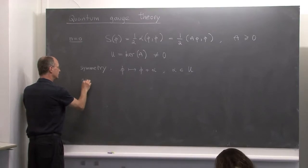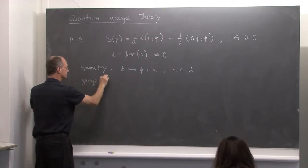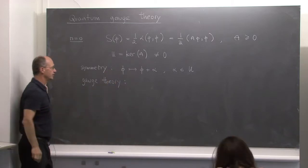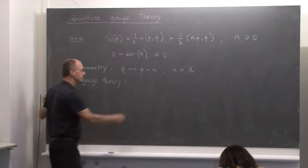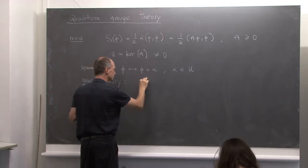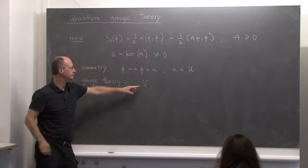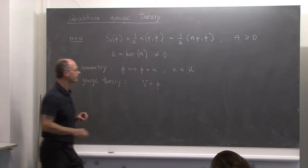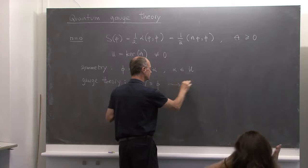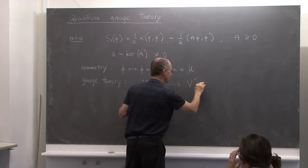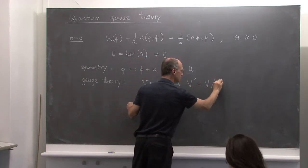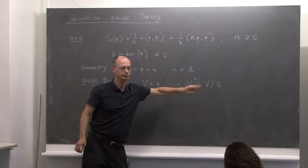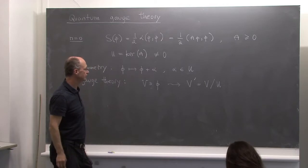This actually means that the theory has a symmetry — a symmetry by shifts: phi goes to phi plus alpha, where alpha is an element of U. The action does not change. If you think about it as a gauge theory, this means that instead of integrating over the space V, we should look at the space V prime, which is V mod U. That's the space over which we want to integrate.